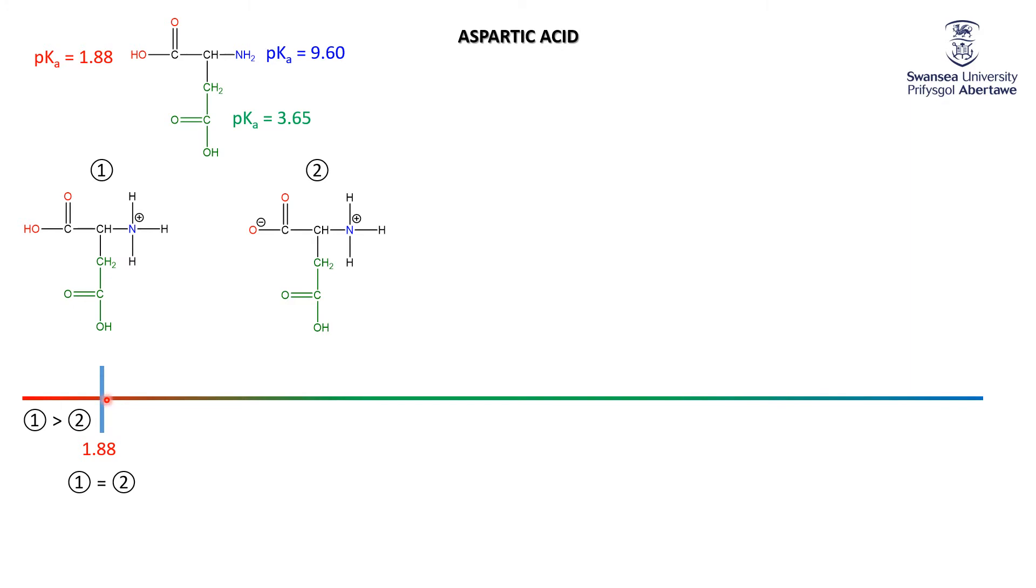As we keep increasing the pH, more and more of one turns into two until we've got hardly any one left at all. But two still has an interesting acid group—the green acid. As the pH goes up and we get less of one, more of two starts turning into its conjugate base, three. The special point for that is pH 3.65, where the concentration of two equals the concentration of three.